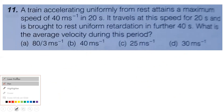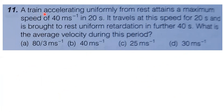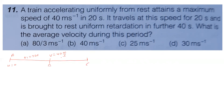Eleventh question: a body accelerates uniformly from rest, attains maximum speed of 40 meter per second in 20 seconds, travels at this speed for 20 seconds, then is brought to rest with retardation over 40 seconds. Find the average velocity. Points A to B: acceleration phase, time T1 equals 20 seconds. B to C: constant speed, time T2 equals 20 seconds. C to D: deceleration, time T3 equals 40 seconds.